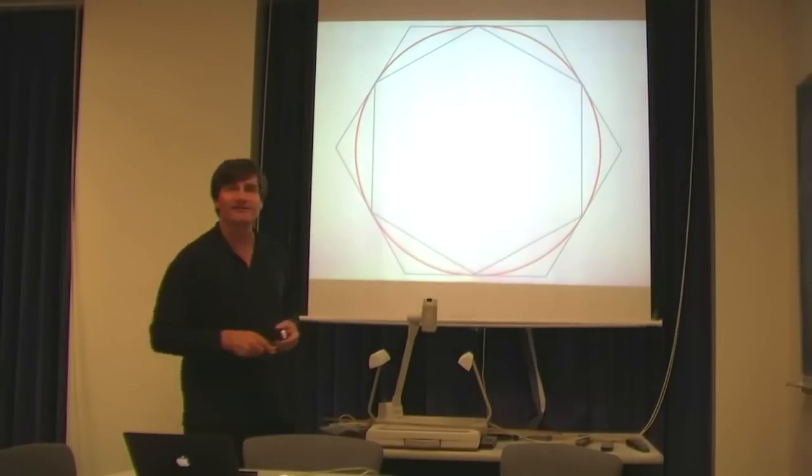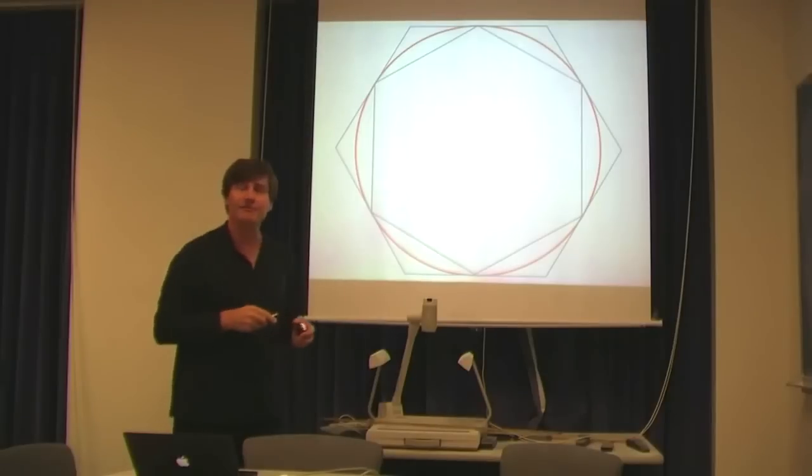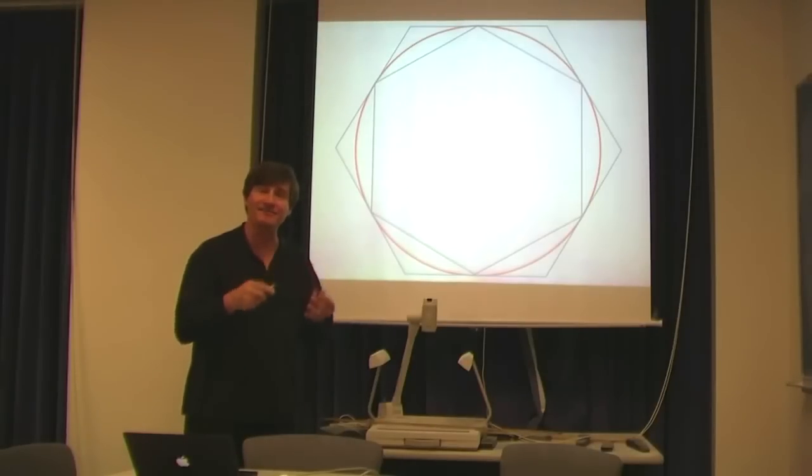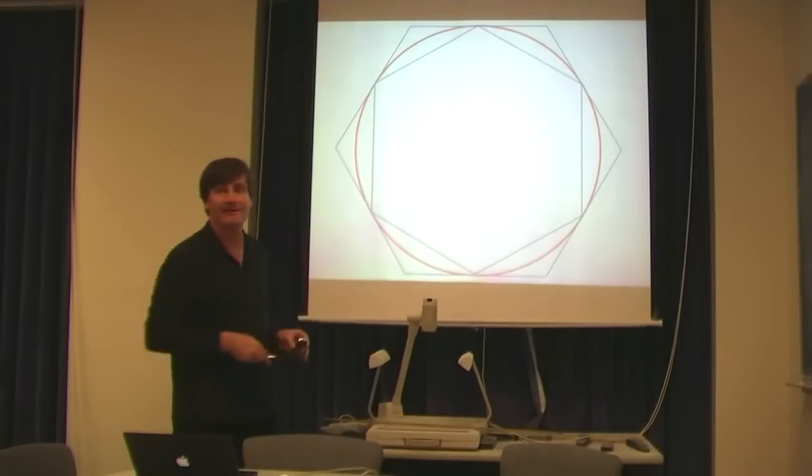How did Archimedes do this? He drew a circle with radius 1 for simplicity, and then he drew a regular polygon with n sides inside the circle such that the corners barely touch the circle. Here I use a polygon with 6 sides, a hexagon, where the corners barely touch the circle. Then calculate the perimeter of that hexagon.